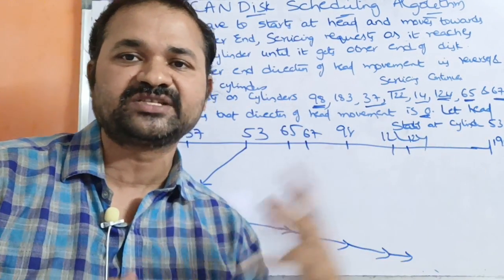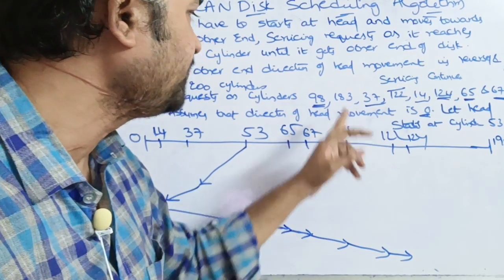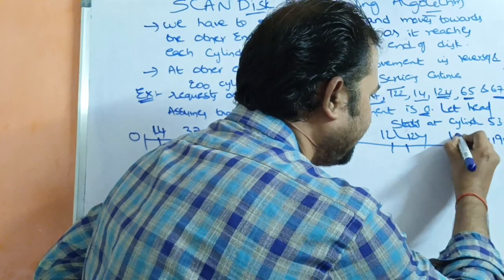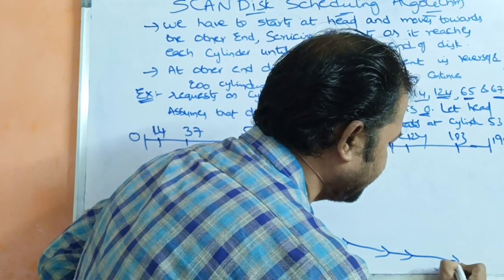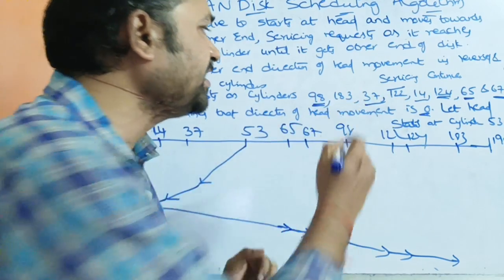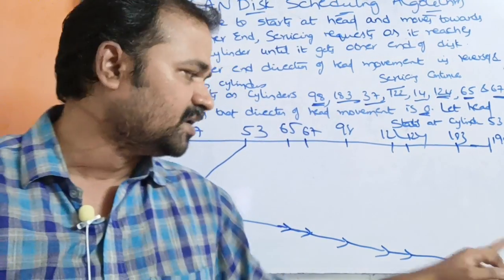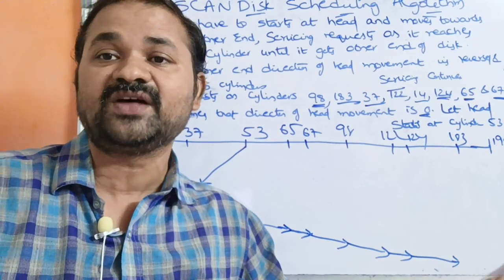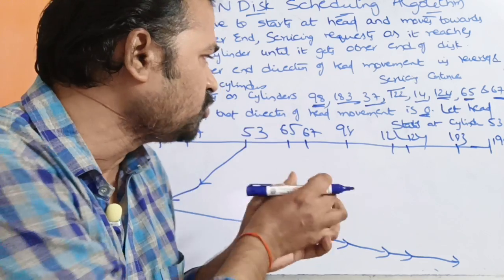After 98, we have cylinder 124, which is processed. After 124, we have cylinder 183, which is then processed. After 183, there are no more requests, so there is no need to reach the final cylinder 199.